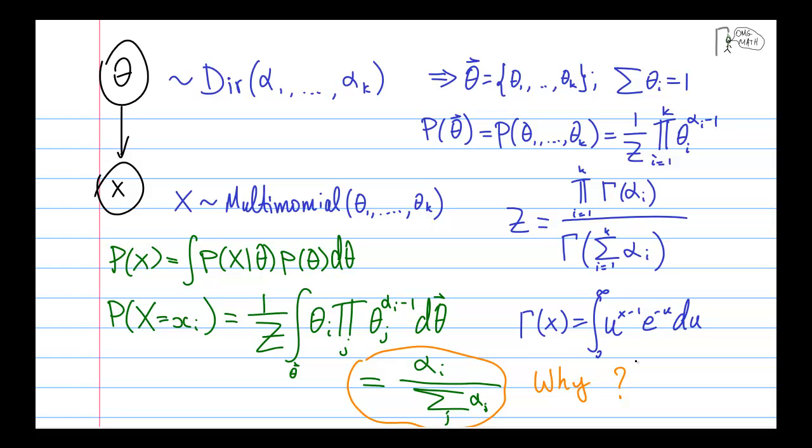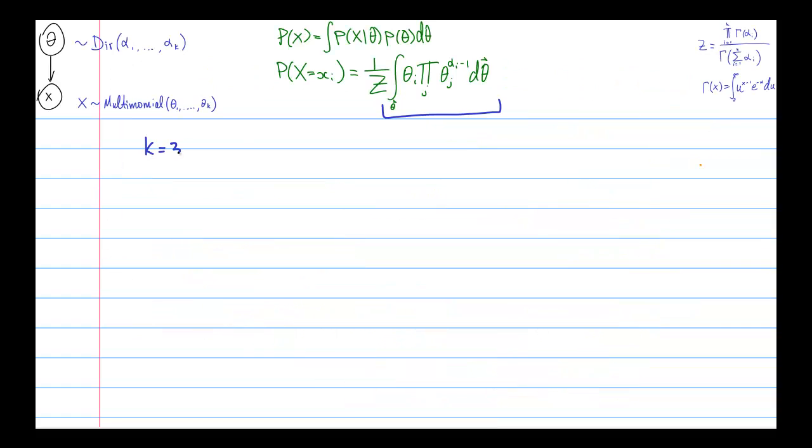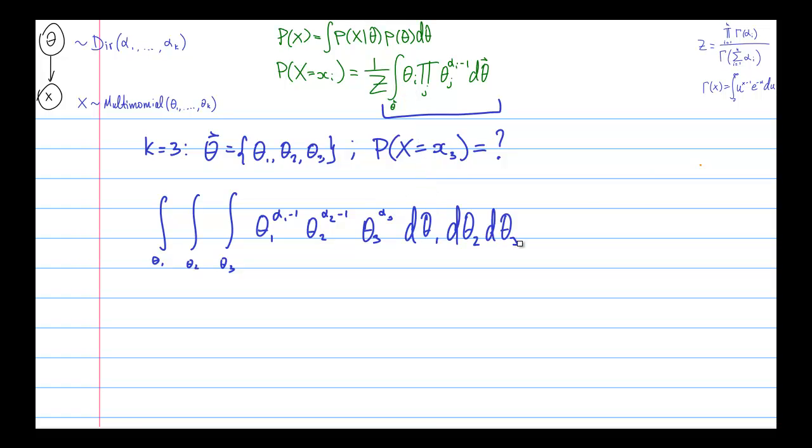So let's set up the problem. We are taking this integral and for the sake of concreteness, let's, instead of taking the k-variate integral, let's set k equals to 3 explicitly. So our multinomial parameters are theta 1, theta 2, and theta 3. And again, for the sake of concreteness, let's compute the probability that x takes on a specific value, little x sub 3. Okay, so now we have this triple integral. And what is the limit of integration? Well, that is actually going to depend on the method that we will use to solve the integral. And one possible thing to do is to integrate this whole business over a simplex.